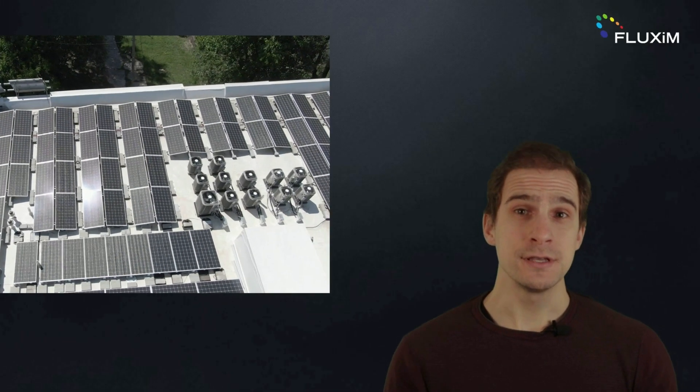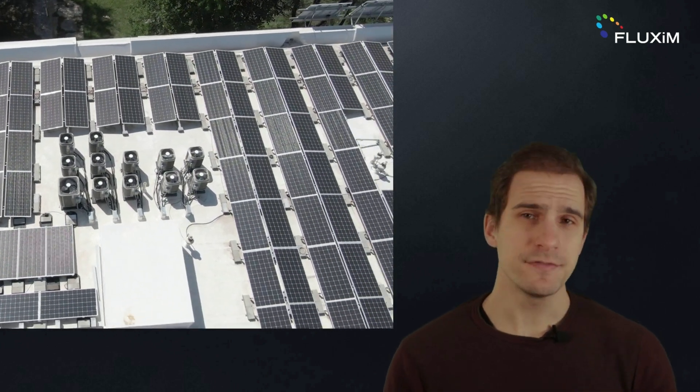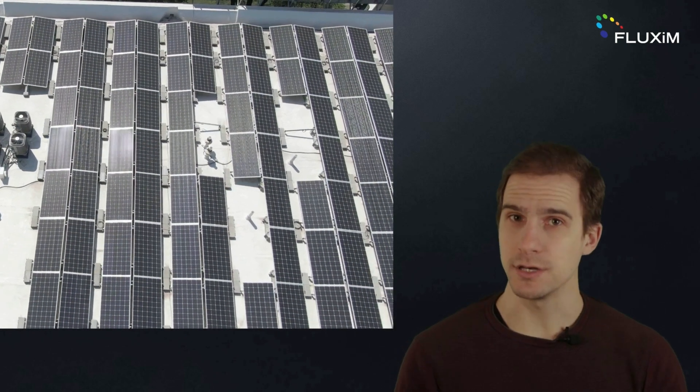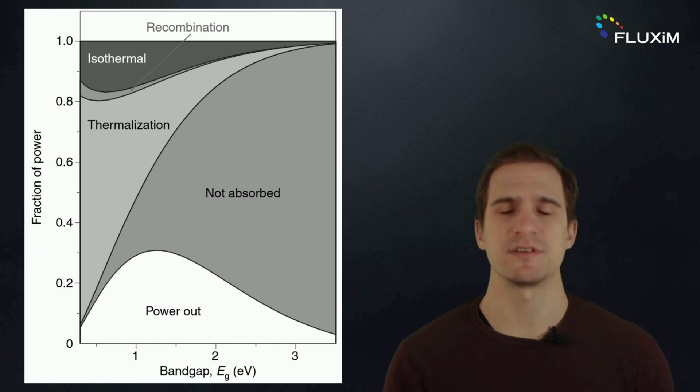Silicon-based single-junction PV modules make up 95% of the PV market. The most efficient solar cell currently available has an efficiency of 26.8%, while the theoretical limit, the Shockley-Queisser limit, is about 32%. The efficiency is limited by three types of losses.